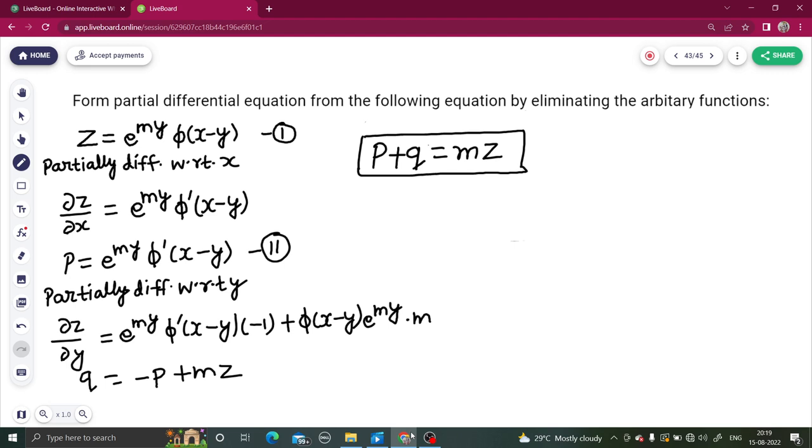As always, in any type of problem, the fundamental remains the same. Partially differentiate with respect to x taking y as constant. First step, partially differentiate with respect to y taking x as constant. Second step, with respect to y taking x as constant. Obtain equations. Try to eliminate the arbitrary constant there. You will need a bit of brain and that's it. Nothing, as it will hardly take a minute for you to solve this type of question.